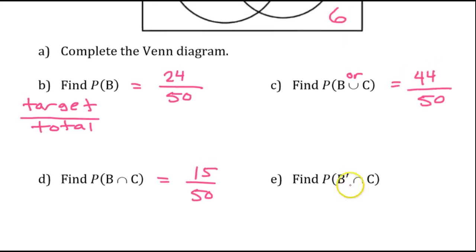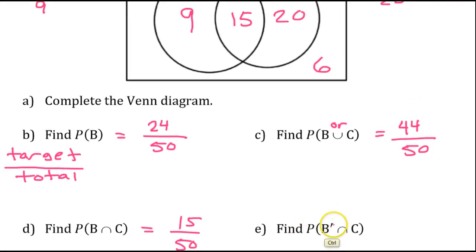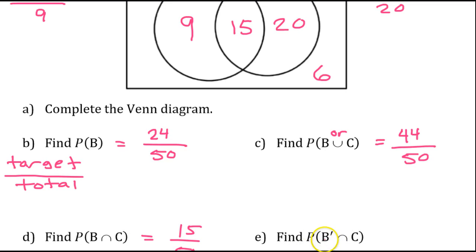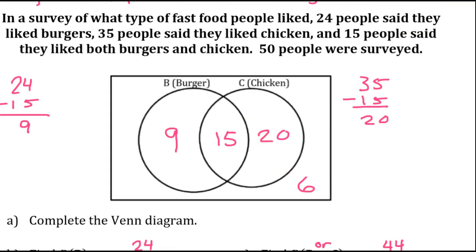This little mark on the B means not B. So, we have to be very careful. This is an and problem. So, that means we want the overlap of not B and C. Let's start with not B. The not B numbers are the 20 and the 6. These are the people who do not like burgers. Not B.